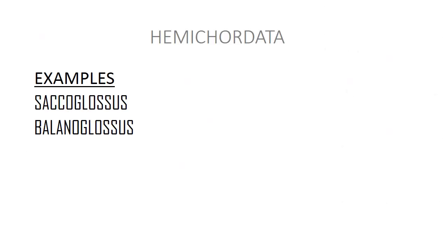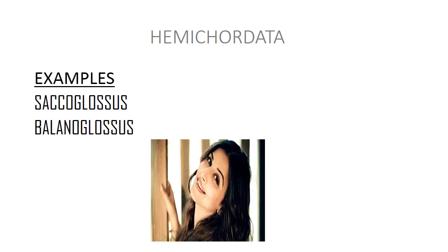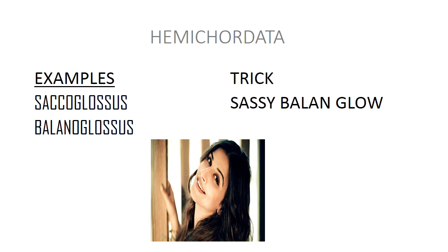The next is Hemichordata. The examples are Saccoglossus and Balanoglossus. You can remember these through the famous actress Vidya Balan, who is a very glowing personality. The trick is 'Sesi Balan Glow': from 'Sesi' it's Sacco, from 'Balan' it's Balano, and from 'Glow' it's Glossus — giving Saccoglossus and Balanoglossus. The Hemichordata tricks are done.